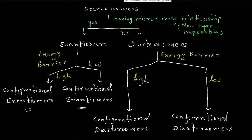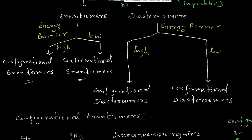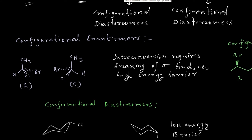Now let us go through the examples. First we will discuss configurational enantiomers. We have two molecules here. We can clearly see that they are mirror images of each other but they are not superimposable. If you try to superimpose one molecule onto the other, you will not be successful.